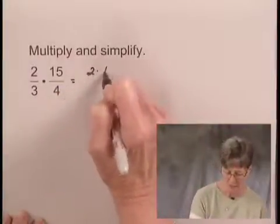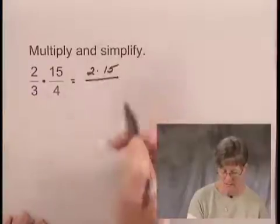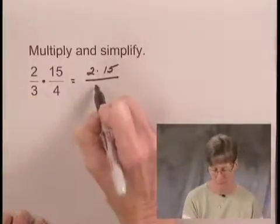Multiplying the numerators, I have 2 times 15. And multiplying the denominators, I have 3 times 4.